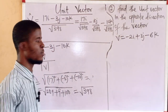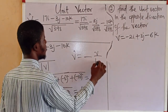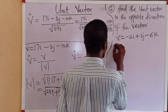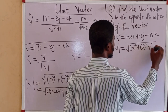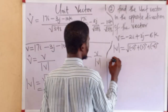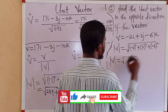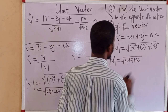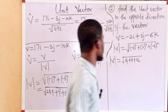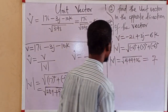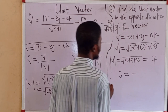Now let's find the unit vector in the opposite direction. The formula is minus V over the absolute value of V. For this part, vector V appears to be minus 2i plus 3j minus 6k. The modulus is the square root of minus 2 squared plus 3 squared plus minus 6 squared, which is the square root of 4 plus 9 plus 36, equal to the square root of 49, which is 7.